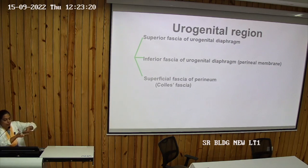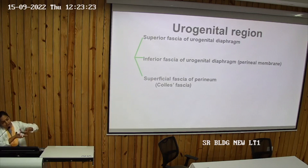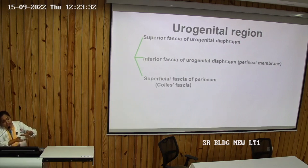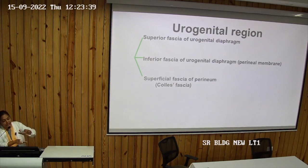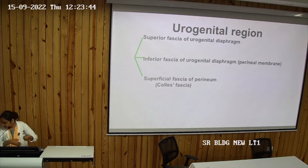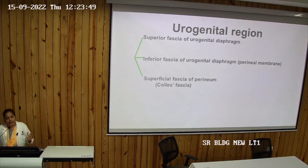This sandwich-like structure between the perineal membrane and the superior fascia is the deep perineal space. Below the perineal membrane and above the superficial layer — Colles' fascia — is the superficial perineal space or superficial perineal pouch. Superior refers to the anatomical level above, inferior to below, while superficial and deep are different terminologies referring to proximity to the skin surface.